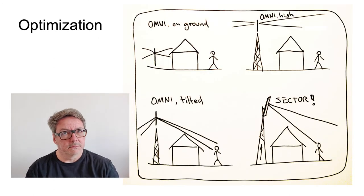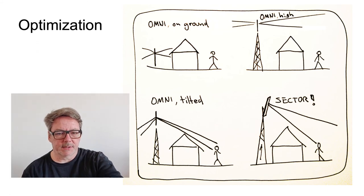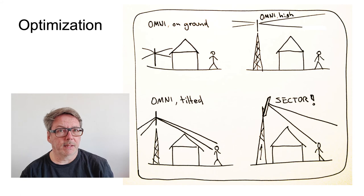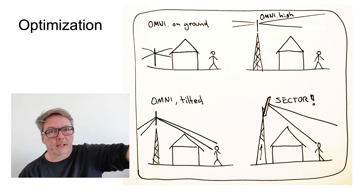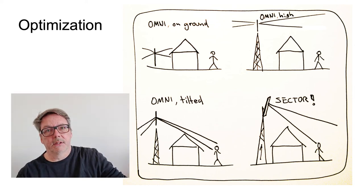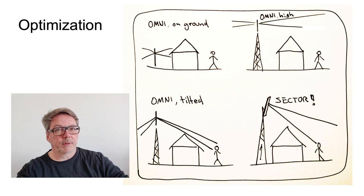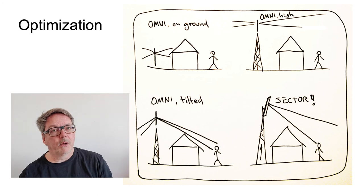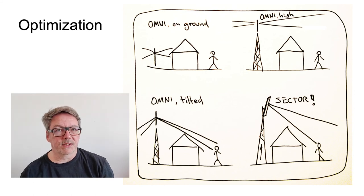Here's a practical example of choosing antennas. Say we have a person behind a house — that's who we want to reach. An omni antenna behind the building is not a good solution. Bringing it up on a tower is somewhat better, but now we're missing the receiving side — we're missing the user. Using an omnidirectional antenna with a tilt down is better, but most of our power is still going in directions where we don't need it. The next improvement is to use a sector antenna instead of the tilted omni.